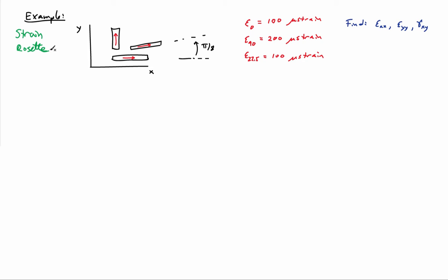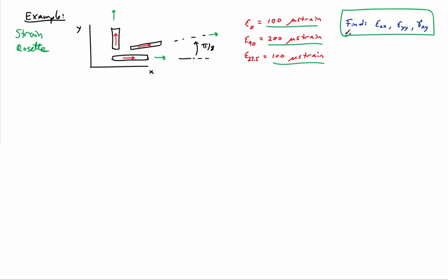Consider a strain gauge rosette with a gauge oriented in the zero direction (the x direction), a gauge oriented in the 90-degree direction, and a gauge oriented at 22.5 degrees. These are pasted onto the surface of an object that's then going to be loaded. After loading, we measure a normal strain of 100 microstrain in the zero direction, 200 microstrain in the 90-degree direction, and 100 microstrain at 22.5 degrees. We'd like to determine the normal and shear strains relative to the x and y axes — given three normal strains, we want two normal strains and a shear strain.